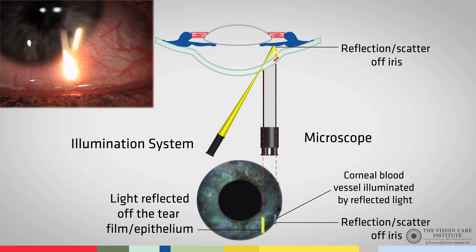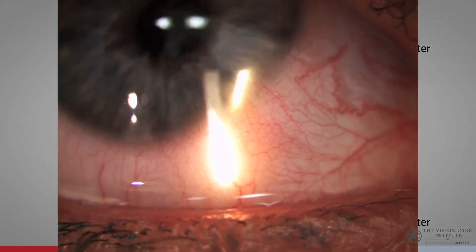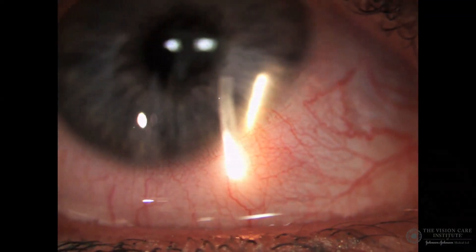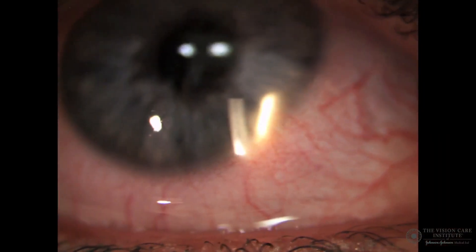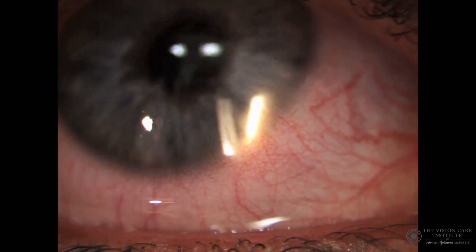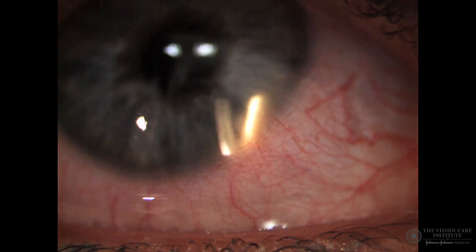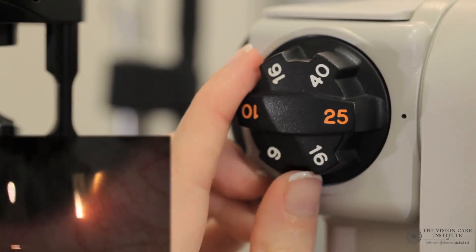Now we have seen this diagrammatically, we can start to see some of the structures here on a real eye. To improve the visibility, we can decrease the height of the slit to reduce glare. Some blood vessels are now clearly visible above the patch on the right. Increasing the magnification further allows us to see some of those blood vessels in greater detail as we can see here.